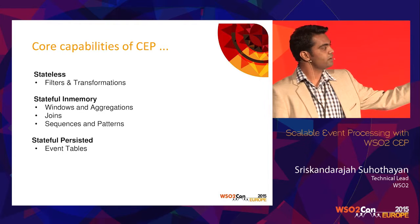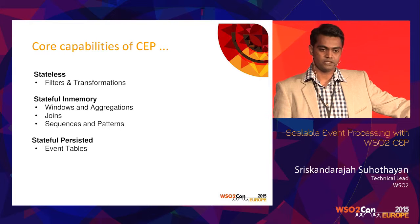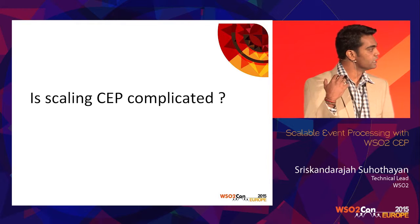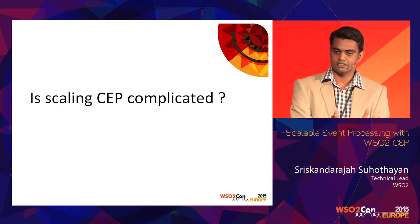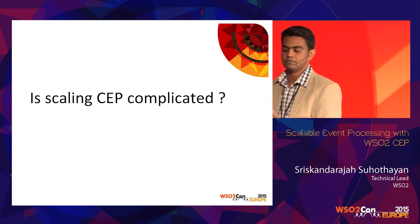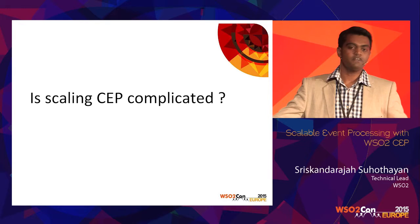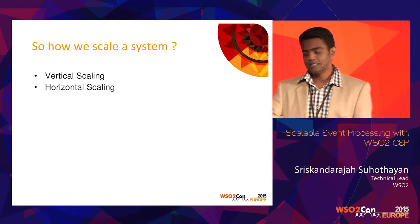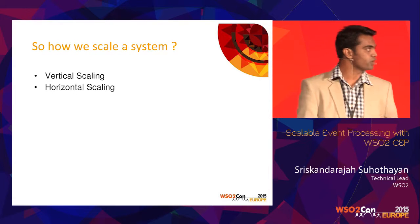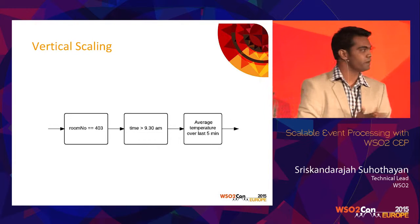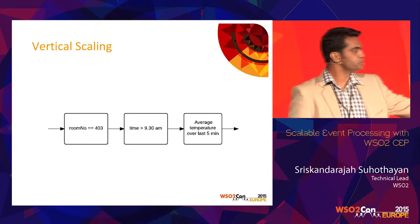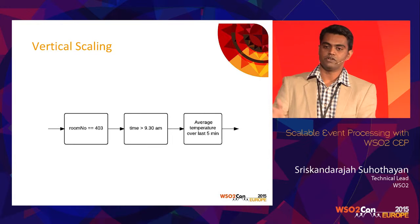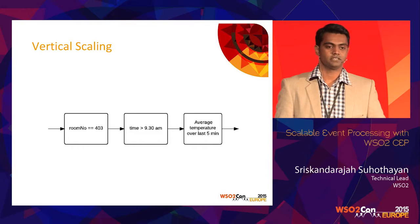So we have both stateless and stateful processing in CEP, and we need to think about how to scale it. If it's stateless, we can horizontally scale it like an ESB or service. But stateful processing is where the problem comes in, and we also need performance. Vertical scaling means placing one CEP behind another — you can have filters on top to reduce the event load so the backend only gets relevant messages and can process much faster.